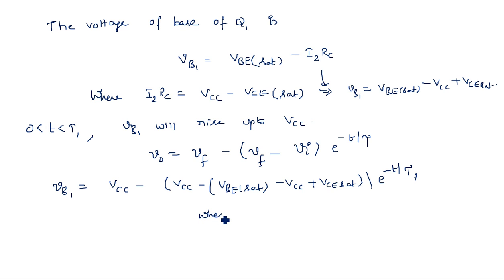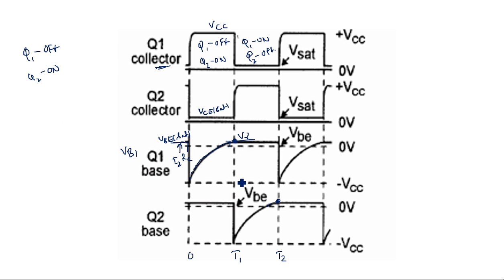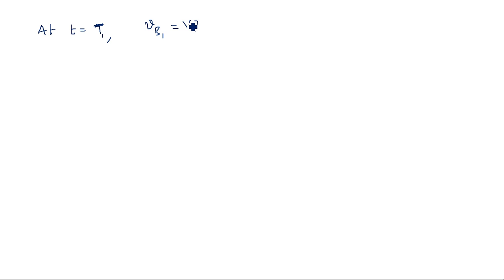Exactly at t = T1, VB1 becomes V_gamma. So substituting t = T1 and VB1 = V_gamma into the expression: V_gamma = VCC − (2VCC − VBE_sat − VCE_sat)·e^(−T1/R1C1).